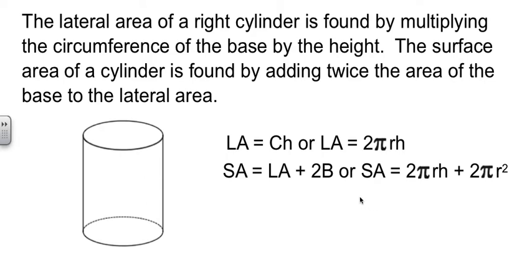And then to get the total surface area, we add the two circles. So we could write it this way as 2B. Insert your own Shakespeare joke there.